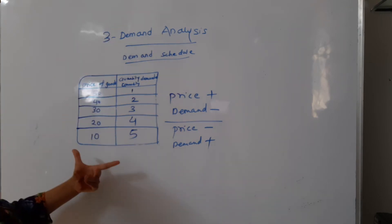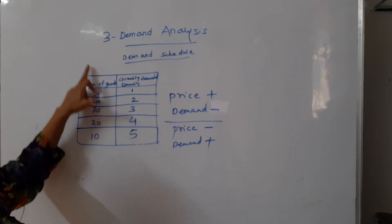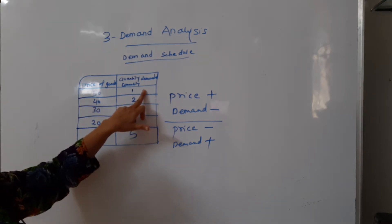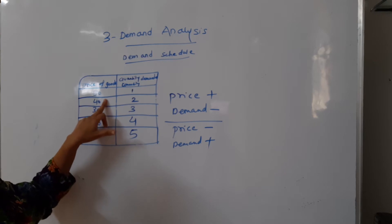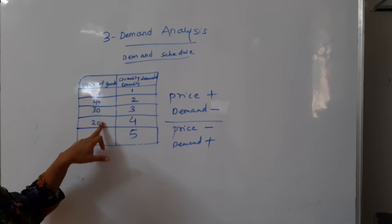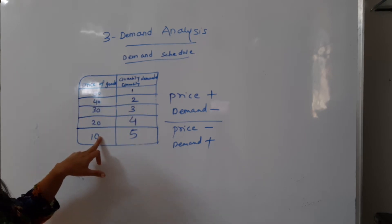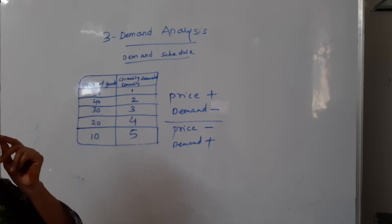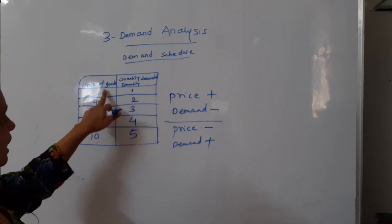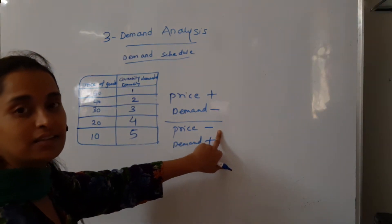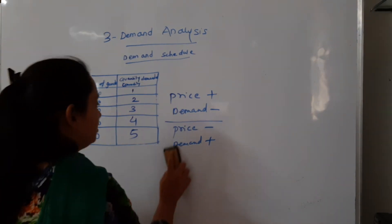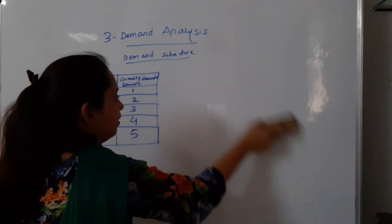Aayye, isi cheez ko hum log tabular mein dekhte hain. Jab prices pachaas thi, tab demand sirf ek hi thi. Jab prices thodi kam ho gayi, demand badh gayi. Prices 30 ho gayi, demand 30 ho gayi. Prices 20 ho gayi, demand aur badh gayi. Prices sabse kam ho gayi, demand sabse zyada ho gayi. Jaise jaise prices kam ho rahi hai, waise waise demand badh rahi hai.